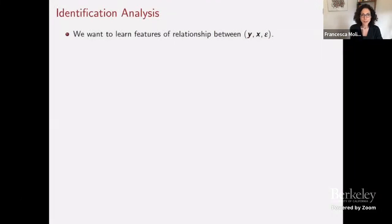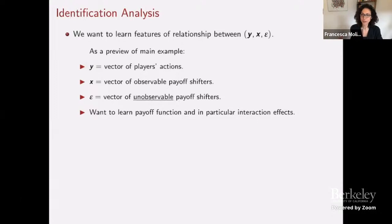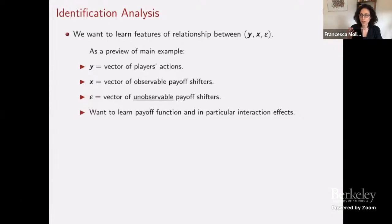First, I want to get on the same language in terms of what we mean by identification analysis — this is a good segue to the previous presentation. What we want to do is learn features of the relationship between some variables y, x, and epsilon. To make it concrete: think of y, the outcome variable, as a vector of players' actions — enter the market or don't enter. Think of x as a vector of observable payoff shifters, and epsilon as a vector of unobservable payoff shifters.